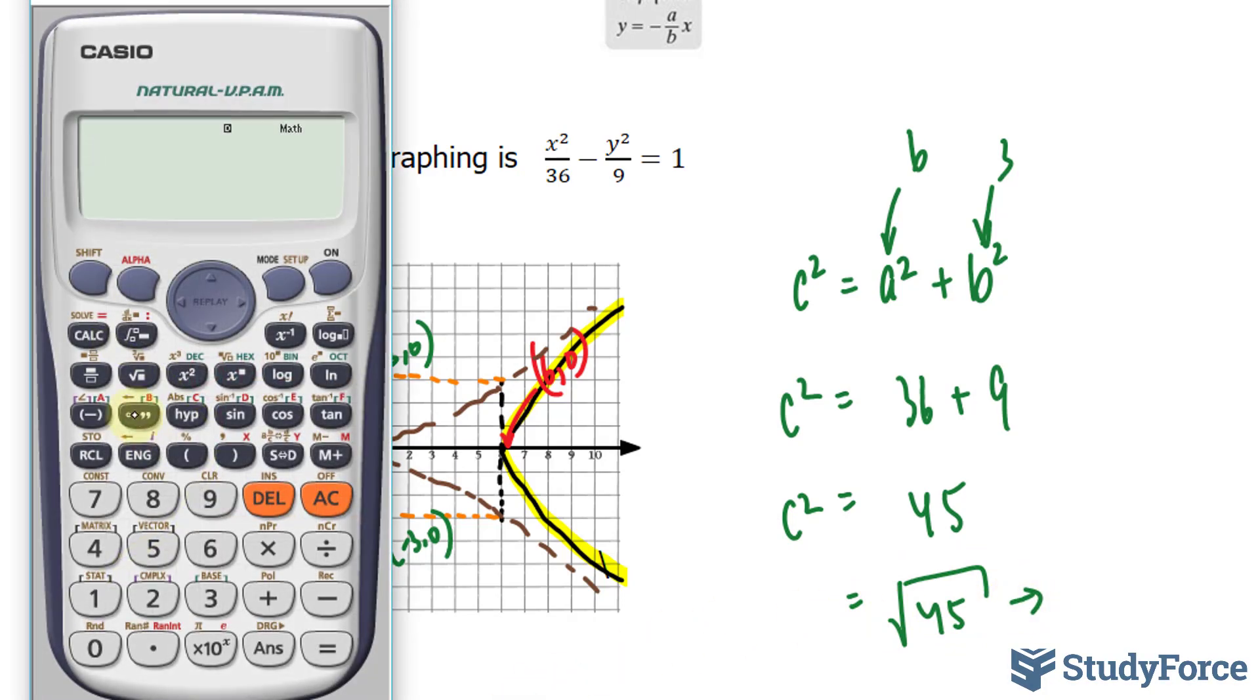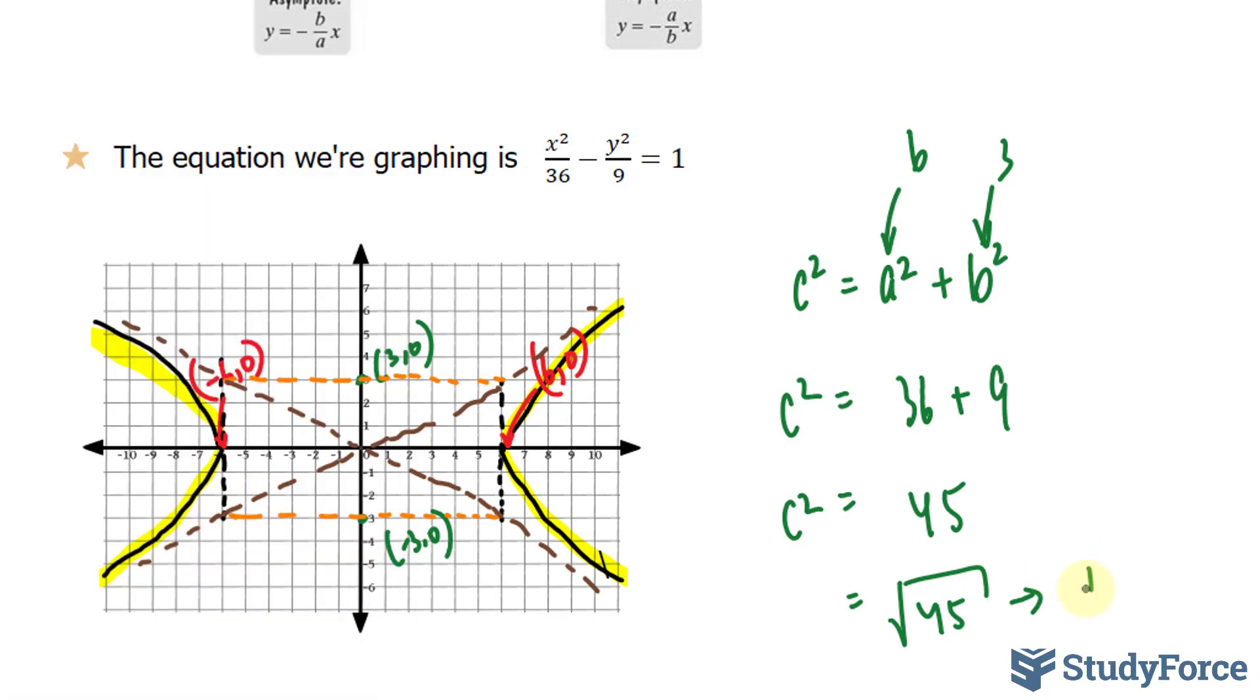Let's use our calculator. The square root of 45 is approximately 6.7. So we have plus minus 6.7 and 0. Therefore, one of our focus points will be positioned here, and the other positioned there.